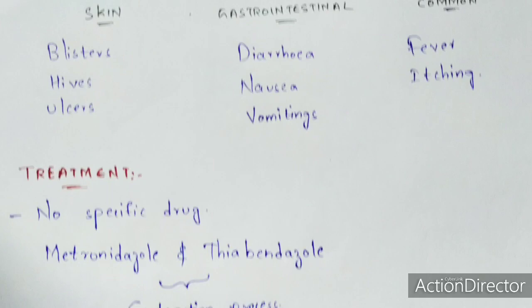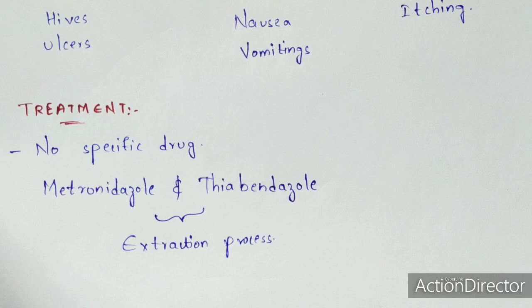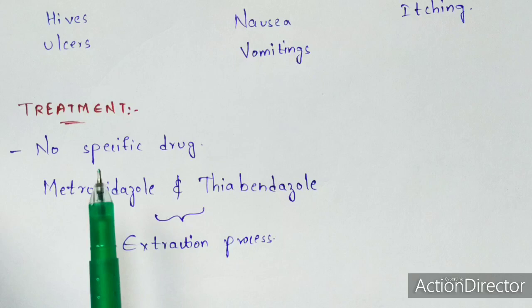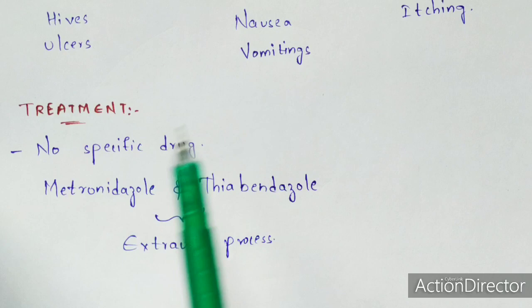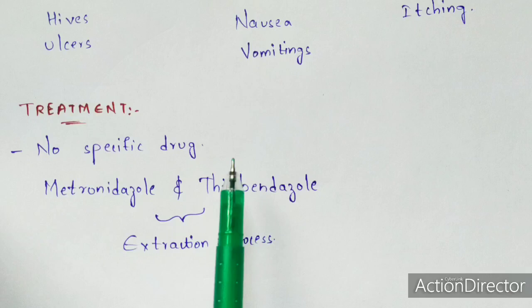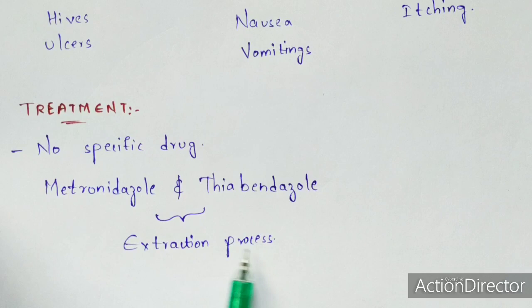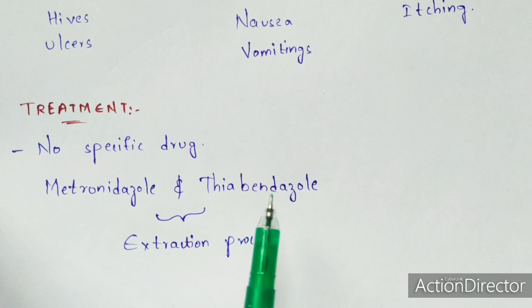Regarding treatment, there is no specific drug that has been discovered yet. The common drugs given to infected persons are metronidazole and thiabendazole. These are common drugs given for any parasitic disease. They are used to control the disease and also for the extraction process — that is, extraction of the worm from the wound or blister region. That covers the treatment, symptoms, life cycle, structure, and introduction of Dracunculiasis.